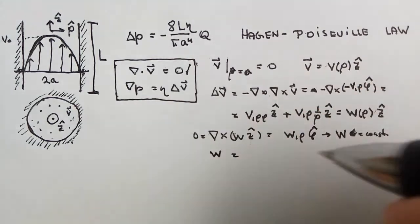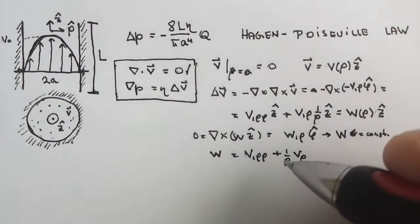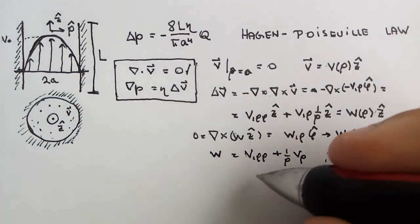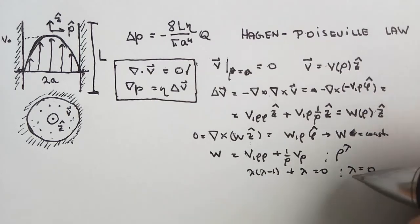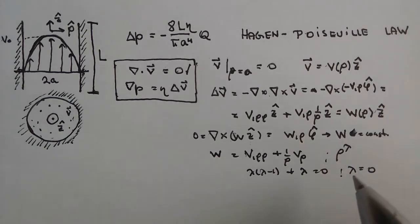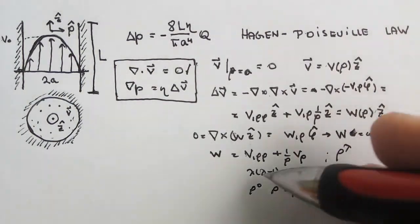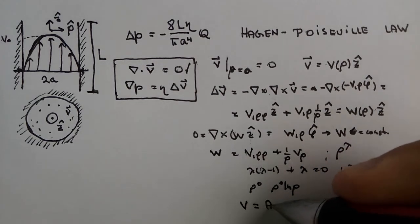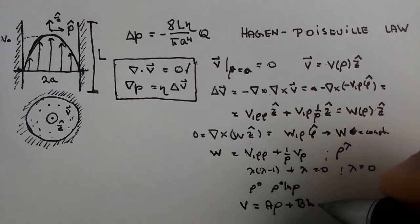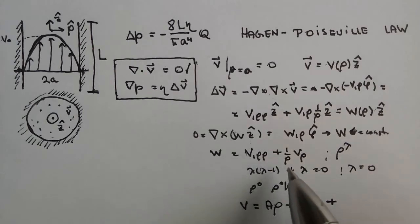With W constant, the equation for V becomes: d²V/dRho² + (1/rho)*dV/dRho = W. This is an Euler equation. Substituting a characteristic solution gives a characteristic equation with a double root, corresponding to two homogeneous solutions: rho^0 (a constant) and rho^0 * ln(rho). So the general homogeneous solution is V = A + B*ln(rho), plus a particular solution.